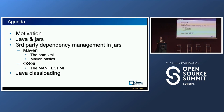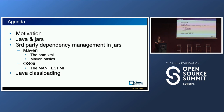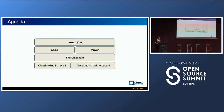Today we'll be talking about these topics. We'll start with some motivation, then talk about Java and jar files in a nutshell. We'll cover third-party dependency management tools in Java — specifically those you can find in jar files — including Maven with the pom.xml and the OSGi initiative with the manifest file. At the end we'll look at Java class loading.